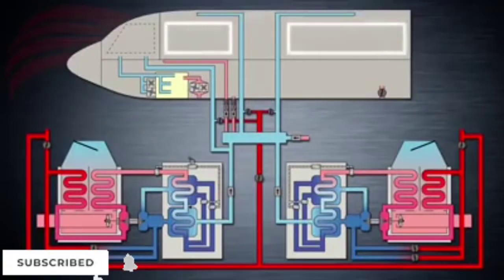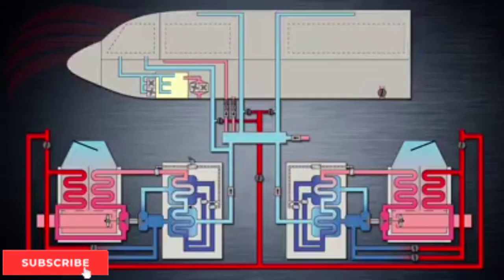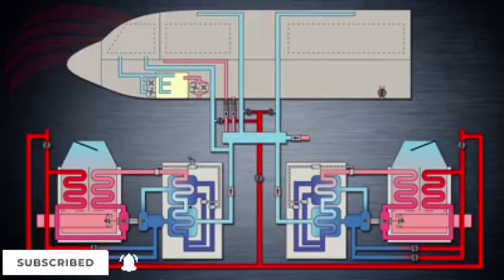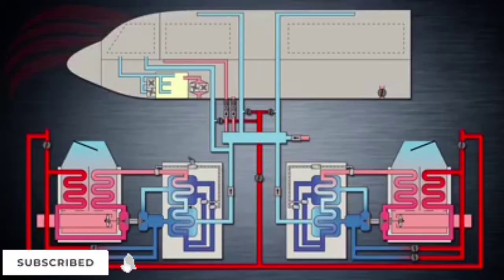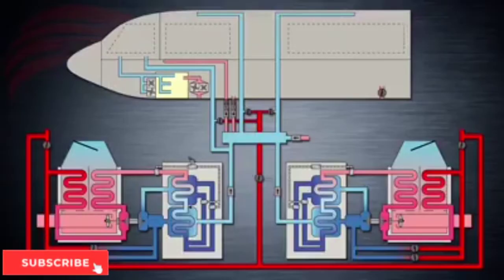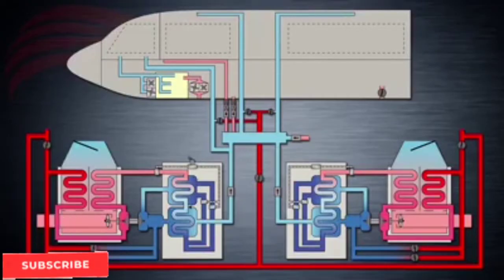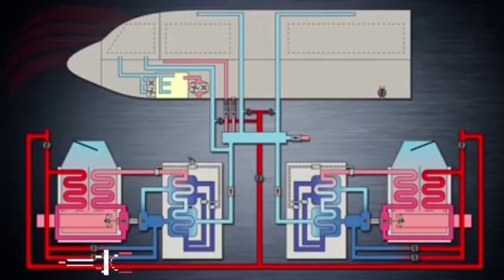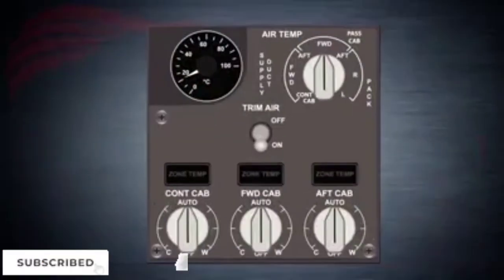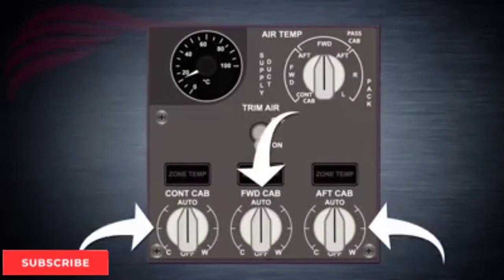The forward and aft passenger compartments are supplied with air from the mixed manifold. From the mixed manifold, conditioned air flows through rising ducts and up sidewalls to an overhead distribution duct that effectively distributes air symmetrically in the cabin. The passenger cabin compartment's temperature may also be controlled with the related forward and aft cabin temperature selectors. These have the same positions as the control cabin selectors. All three cabin selectors have a range of approximately 18 degrees Celsius to 30 degrees Celsius.